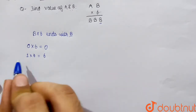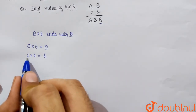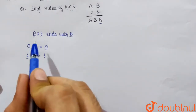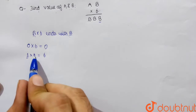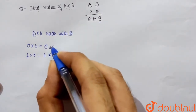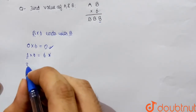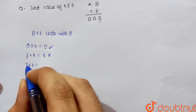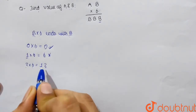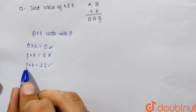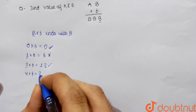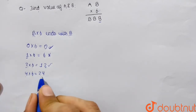1 into 6 is 6, which does not end with 1, so b cannot be 1. For b equals 2: 2 multiplied by 6 is 12, which ends with 2 — so 2 is a valid value of b. For b equals 4: 4 into 6 is 24, which ends with 8, not 4.